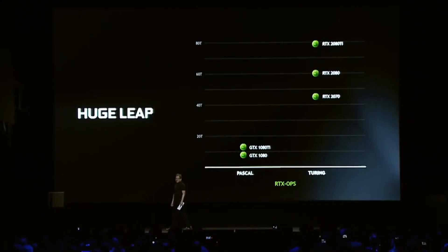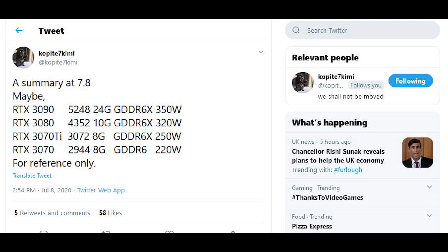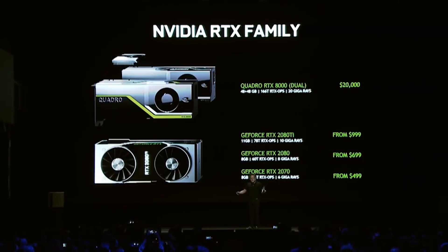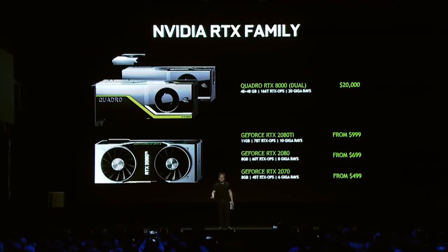We're hearing a lot of rumors about Ampere specifications — allegedly up to 24 gigabytes of VRAM, which is a lot. The cards are apparently launching in the latter part of September. They're probably going to be pretty expensive, which could also be good for people on the used market, as you could pick up an RTX 2080 or 2080 Ti for a decent price. Let me know whether you're going to purchase the 30 series, wait for RDNA 2 benchmarks, hold on to what you've got, or pick up a used card.